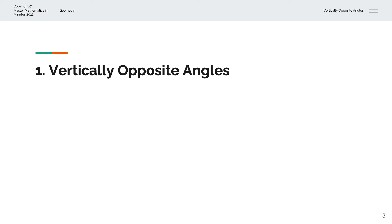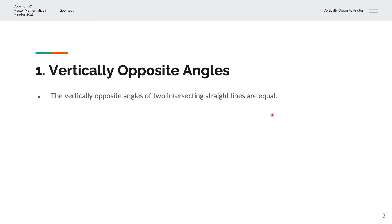So what are vertically opposite angles? The vertically opposite angles of two intersecting straight lines are equal. Let's consider this visually. We have two straight lines and they intersect each other. If we were to label this angle as B, the angle that is vertically opposite B is also equal to B.